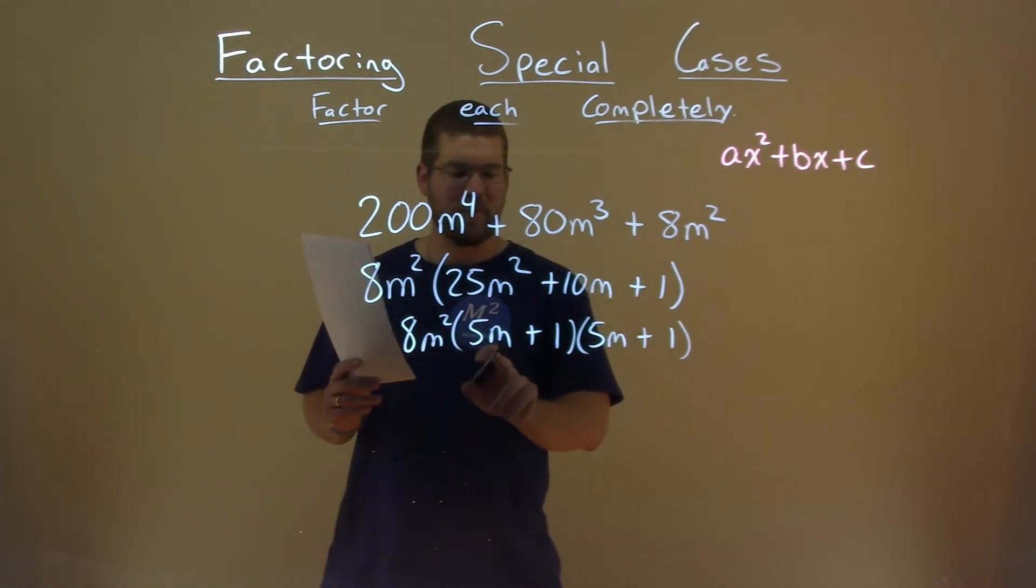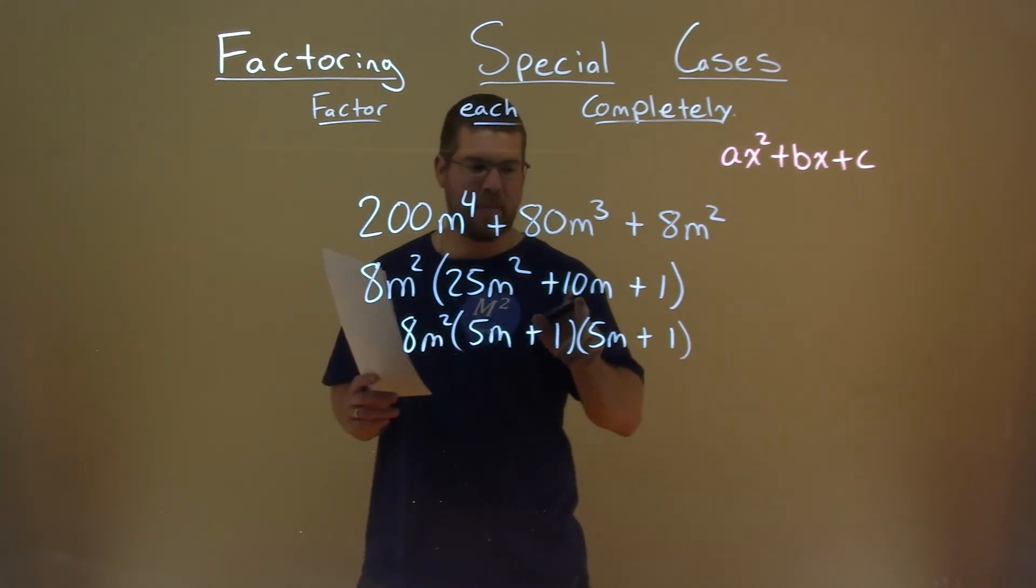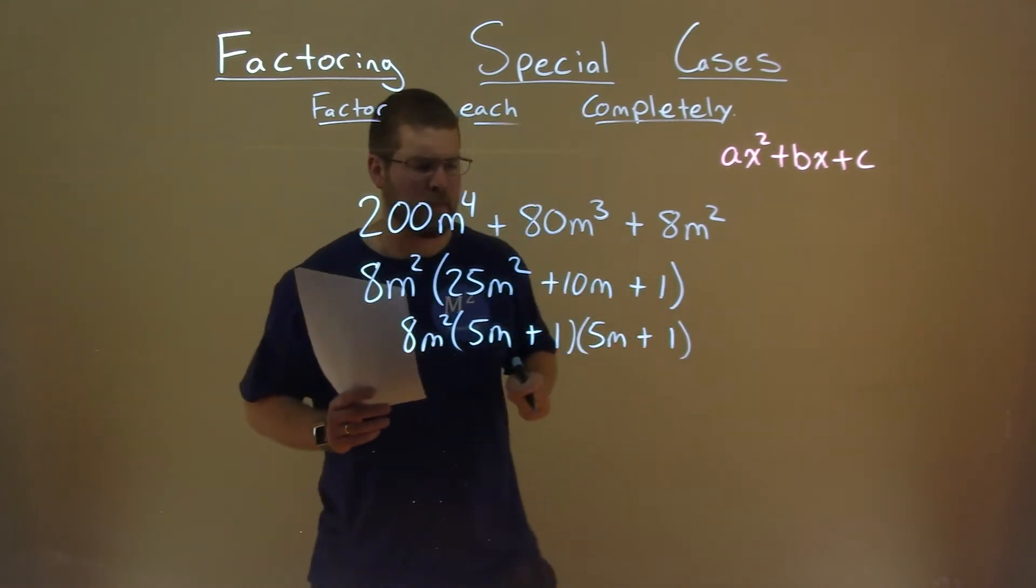Oh sorry, misspoke. 5m times 1 is 5m. 1 times 5m is 5m. Add them together, we get 10m. Made a mistake there. Got it. I'm glad I caught it, and hopefully you caught it too. If you did, let me know down below.